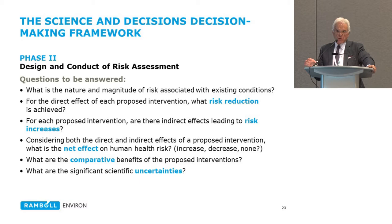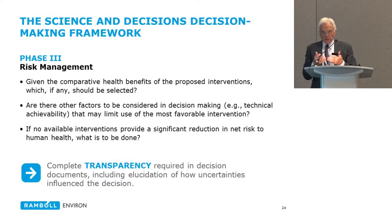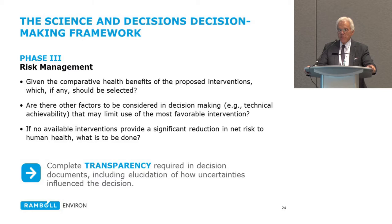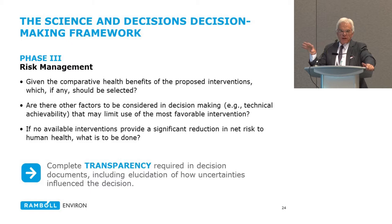Once that information is properly assembled and analyzed, with peer review, it goes to the risk manager — with questions of risk reduction from various interventions, the uncertainties, and what other factors need to be considered, including practical implementation factors. But that's a separate step from the risk assessment itself. All of this should be done with complete transparency — nothing hidden with respect to the science, the uncertainties, and how you went about the analysis. This is a tall order, but it has been done, and there are very good examples of this kind of approach to decision-making available.